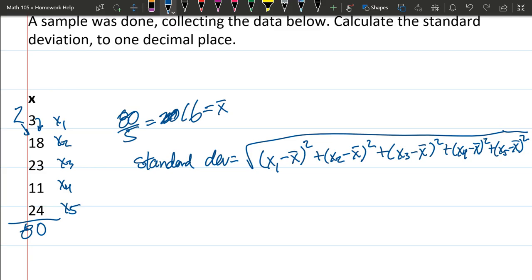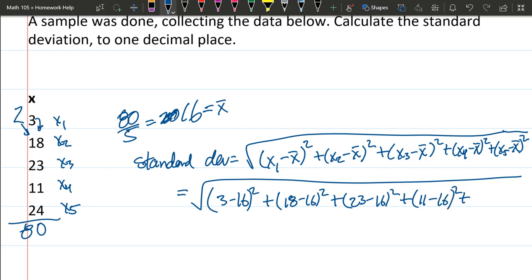I'm not going to do the calculator part of this because it takes a little while to type in, but just make sure that you subtract the values before you apply the square. You'll get a very different result if you don't do that. We use parentheses here to make sure that we do the subtraction before we do the squaring. Let's go ahead and put our actual values in here. So first is 3 minus average is 16 squared plus second one is 18 minus the average squared plus 23 minus the average squared plus 11 minus the average squared plus 24 minus the average squared.